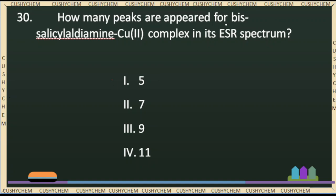So, how many peaks are appeared for the bis-salicylaldeimine copper(II) complex in its ESR spectrum? The options are: five peaks, seven peaks, nine peaks, and eleven peaks. We have the structure of the bis-salicylaldeimine complex.